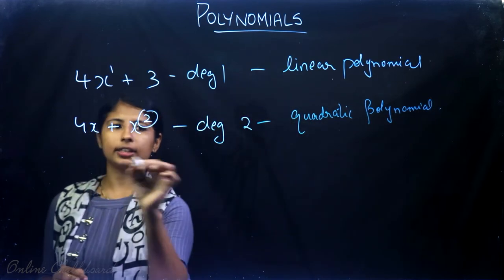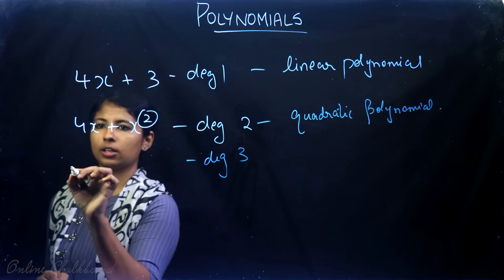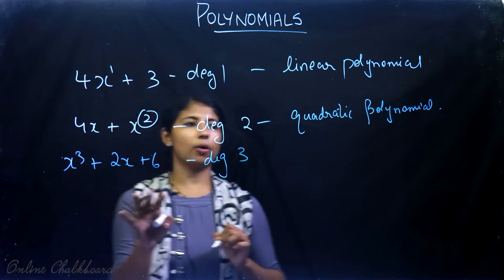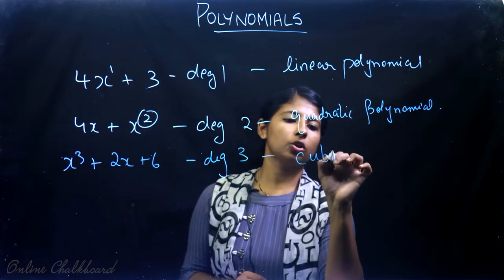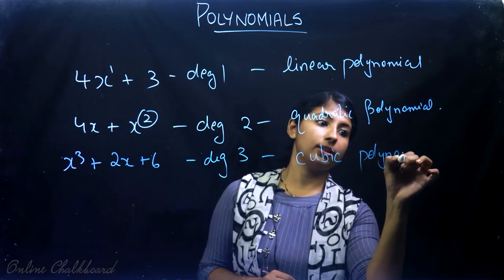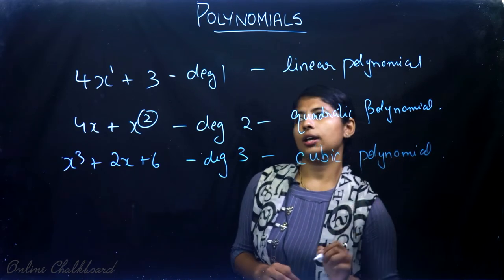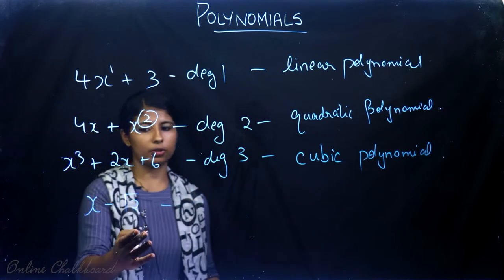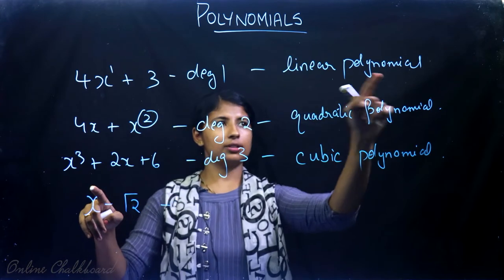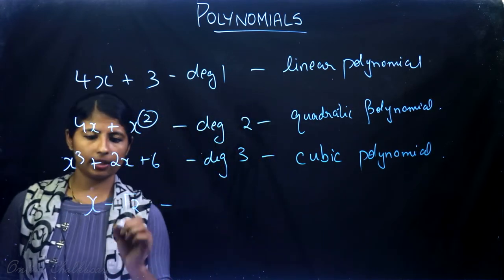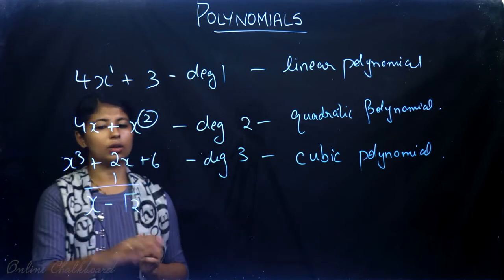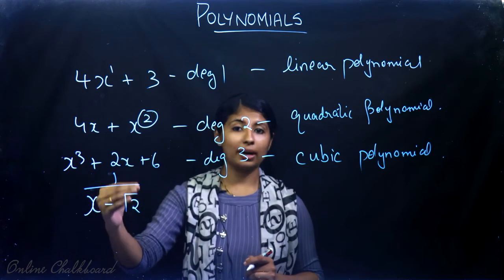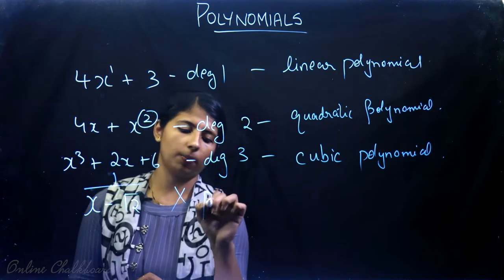If the degree is 3 — for example, x³ + 2x + 6 — it is called a cubic polynomial. For x − √2, the degree is 1, so it is a linear polynomial. However, 1/x − √2 is not a polynomial at all, since we cannot have a variable in the denominator.